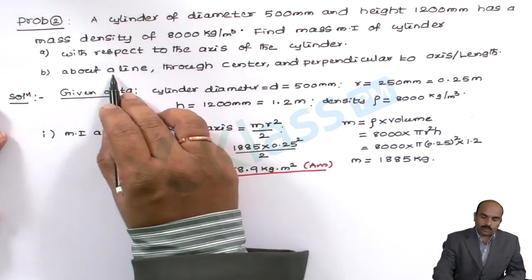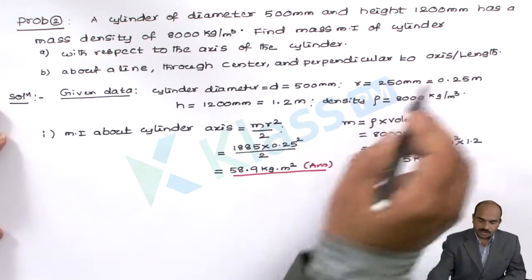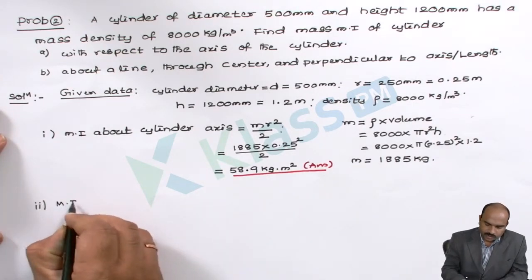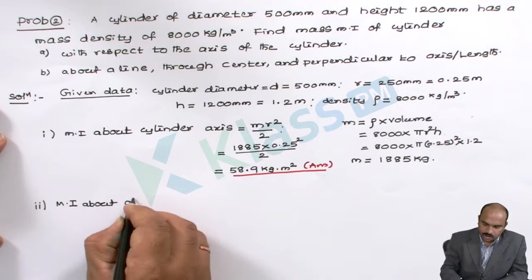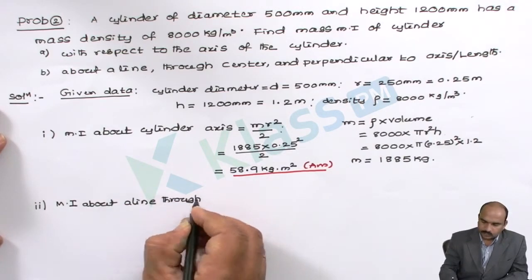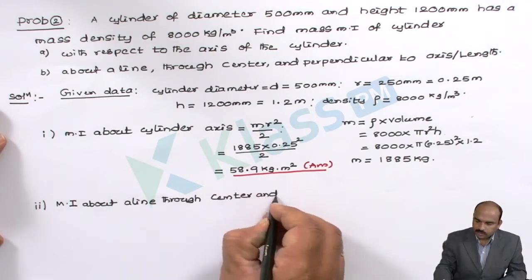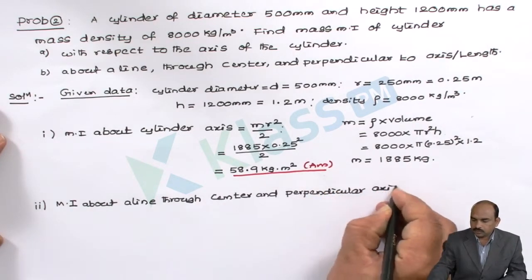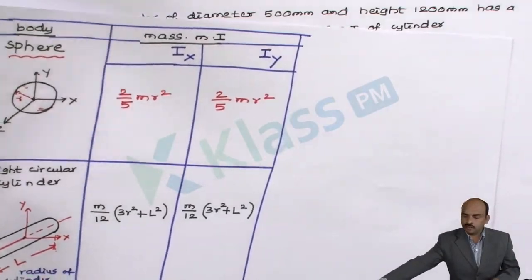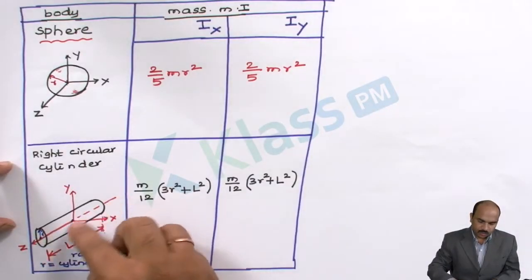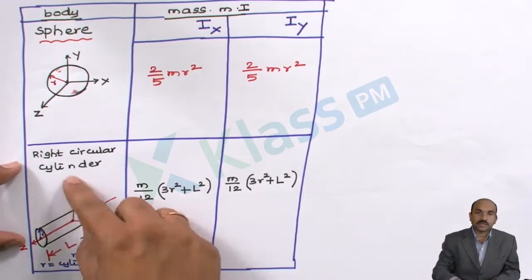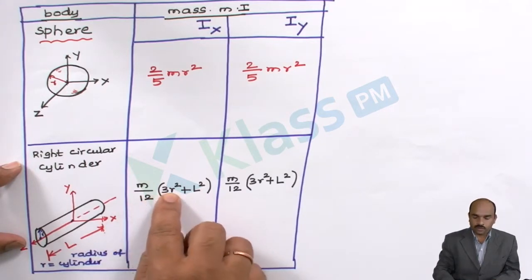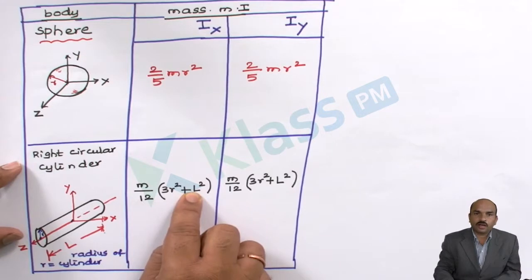The second bit is about a line perpendicular to the cylinder axis — moment of inertia about a line through the centre and perpendicular to the axis. For a cylinder, the formula for moment of inertia about an axis perpendicular to its own axis (about x or y) is: I = M/12 × (3R² + L²), where L is the length or height of the cylinder.